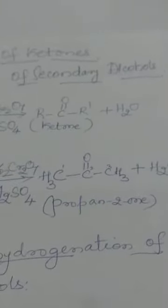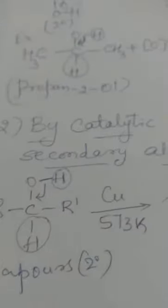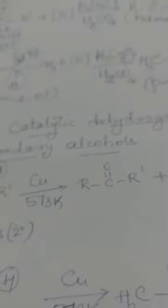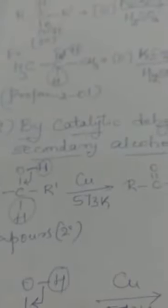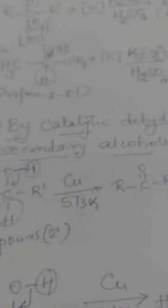The second method of preparation is by catalytic dehydrogenation of secondary alcohols. I hope you remember the dehydrogenation of primary alcohols to get aldehydes. Here it is the catalytic dehydrogenation of secondary alcohols.